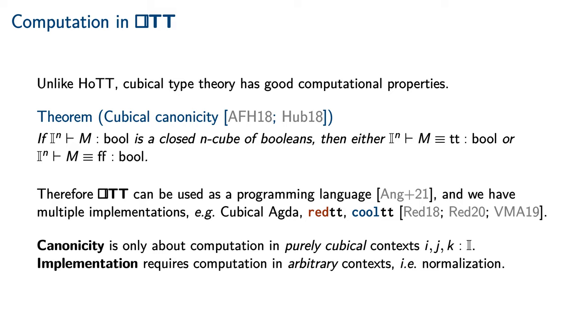Cubical canonicity is itself a generalization of closed canonicity, which characterizes the equivalence classes of closed terms of a base type. A consequence of cubical canonicity is that cubical type theory can be used as a programming language, and we have multiple implementations already, such as cubical agda, redtt, and cooltt.